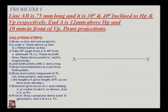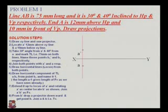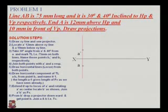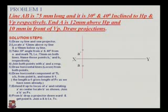To start the example, we draw the XY line horizontally and mark the position of point A. End A is 12 mm above HP, so point A-dash will be situated 12 mm above the XY line. The point A is also 10 mm in front of VP, so point A will be situated 10 mm below the XY line.